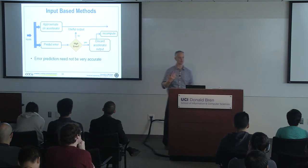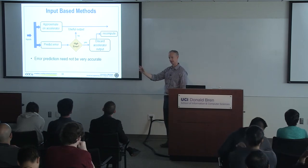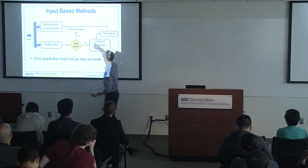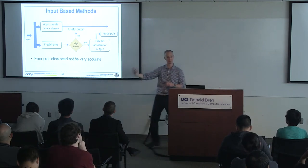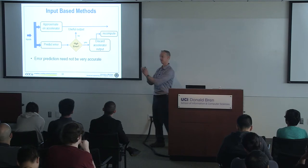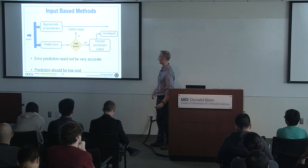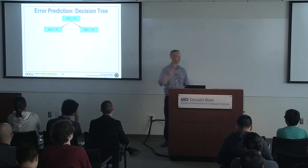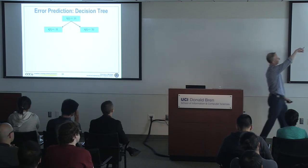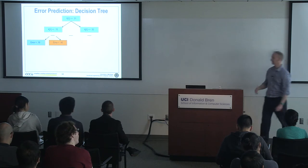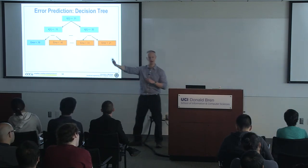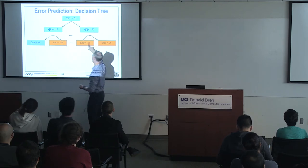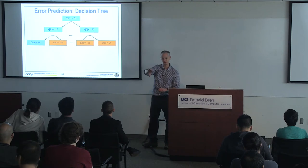Interestingly, this predictor doesn't have to be super accurate. What we care about is false negatives — where the predictor says error is not high but it is high, which lets through a bad result. False positives just cause extra recomputation overhead. So what we really care about is the false negative rate. The predictor also has to be low cost since it's continuously running. One easy approach is a decision tree: look at input values, build a tree where leaves contain the error level. You can then classify whether the approximate result is good or bad.